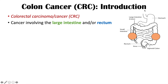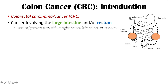If we look at the gastrointestinal system, here's the esophagus going into the stomach. This leads into the small intestines, which wind around in the abdomen, eventually leading to the large intestine. There is the ascending colon, the transverse colon, the descending colon, the sigmoid colon, and eventually to the rectum and to the anus. So any part of the large intestine or the rectum may be involved in this cancer.